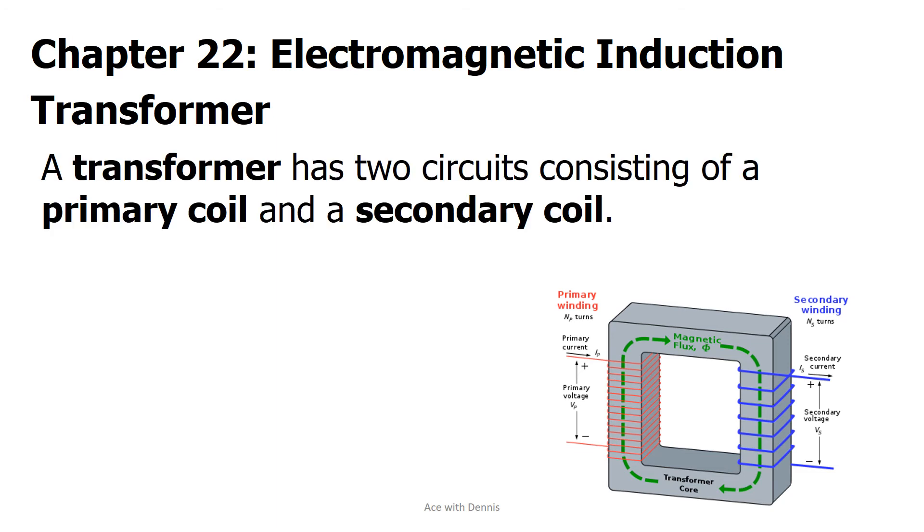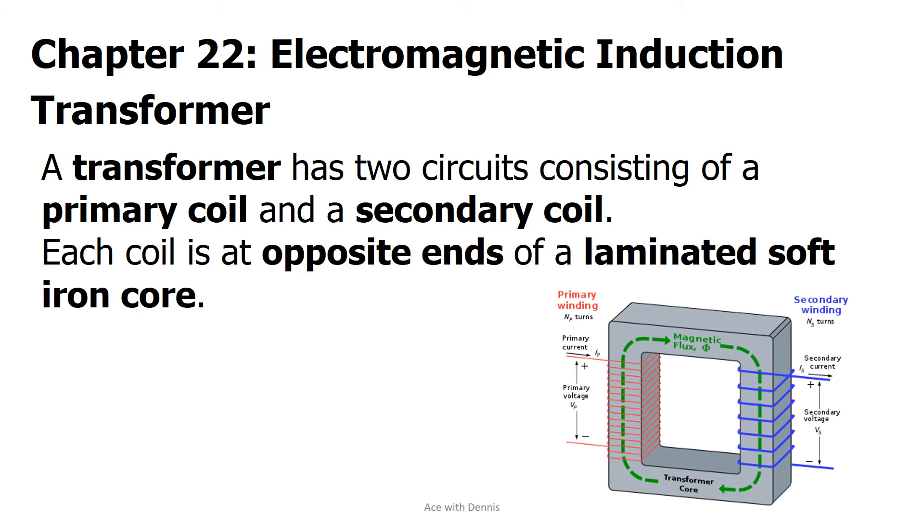Transformer. A transformer has two circuits consisting of a primary coil and a secondary coil. Each coil is at opposite ends of a laminated soft iron core.